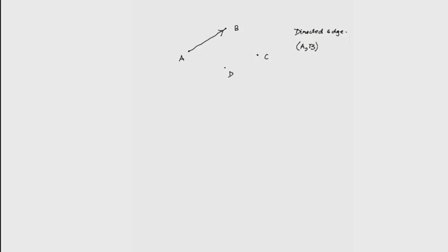Now let us draw one more: (A, C), and we can also write an edge from C to A, then possibly B to D and C to D, C to C as well. So what we have done here is drawn some arbitrary directed edges from the vertices.